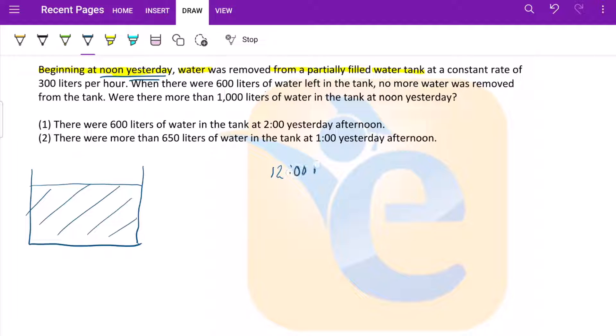Water was removed from the partially filled water tank at a constant rate of 300 liters per hour. So basically at 1 PM the water would be whatever initial amount was there, x minus 300. At 2 PM it would be whatever the initial amount of water was minus 600, and so on and so forth.